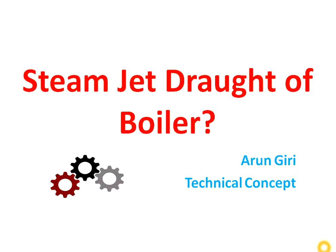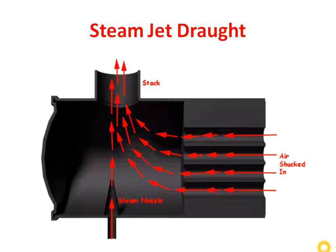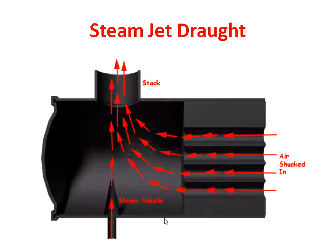So how it works, we will see now. First of all we will discuss the system — how the system is working. So this is the boiler, this is the steam nozzle, and this is the chimney. What happens is when sufficient pressure is generated in this boiler, one line is connected with the steam line, and this steam is spread in this section of the boiler with the steam nozzle.